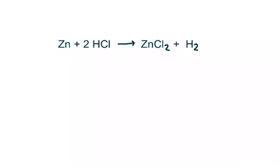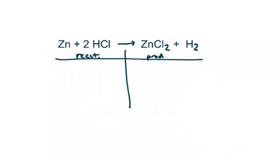Let's do a second example. I have to first divide my equation into reactants and products. Then I'm going to list the elements in the order that they appear on the reactant side. So I have zinc, hydrogen, and Cl, chlorine.